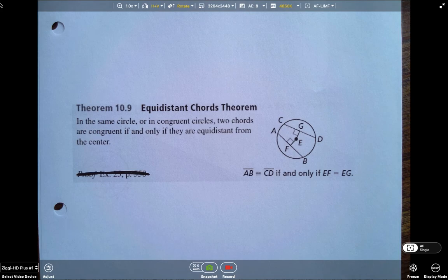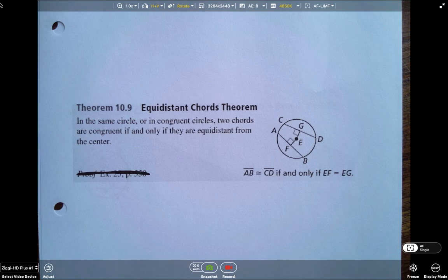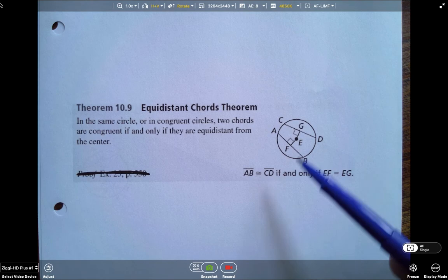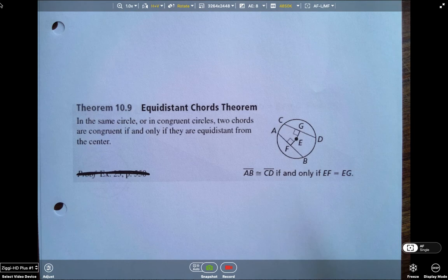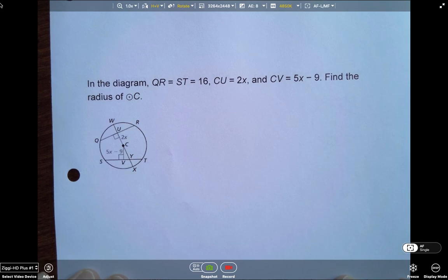One more note card. I know I said previously last note card. I apologize. We really have this as the last one, the equidistant chords theorem. So again, write it down. It is a biconditional. So we say in the same circle or in congruent circle, two chords are congruent if and only if they are equidistant from the center. Remember, equidistant means the same distance. Or in other words, EF has to equal EG. So if I know that the two chords are congruent, I know that they are the same distance from the center. Or if I know they're the same distance from the center, those two chords are congruent.